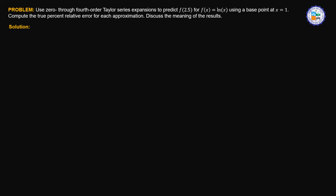Next problem. Use 0 through fourth order Taylor series expansions to predict the function value at 2.5 for f of x equals ln of x, using a base point at x equals 1. Compute the true percent relative error for each approximation and then discuss the meaning of the results.